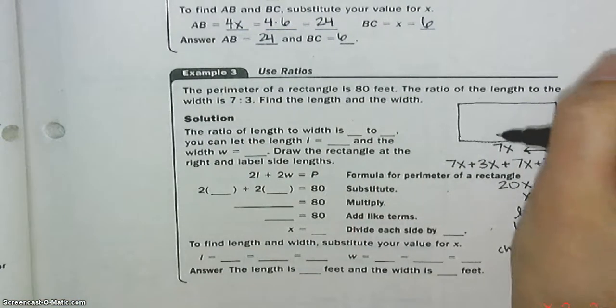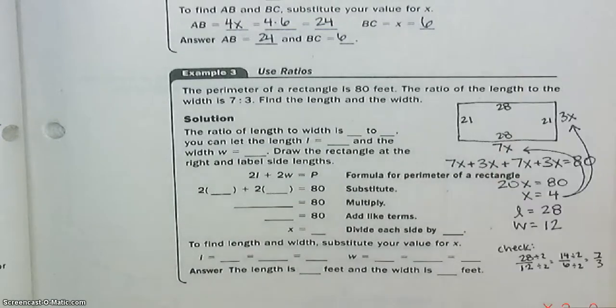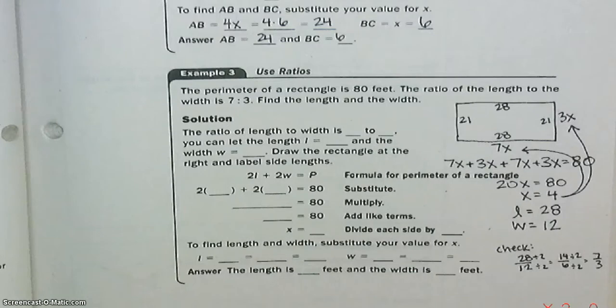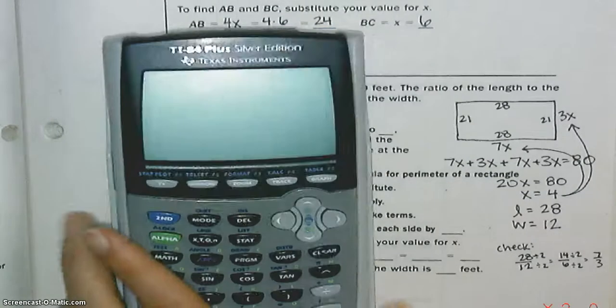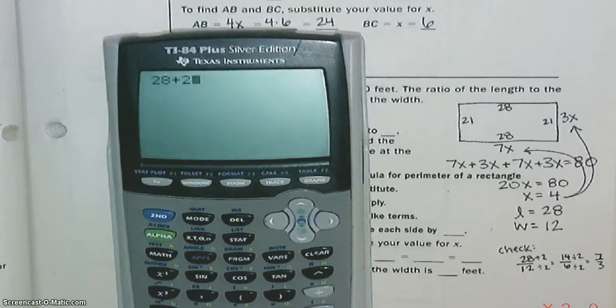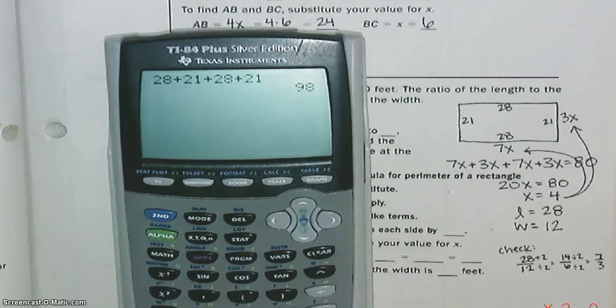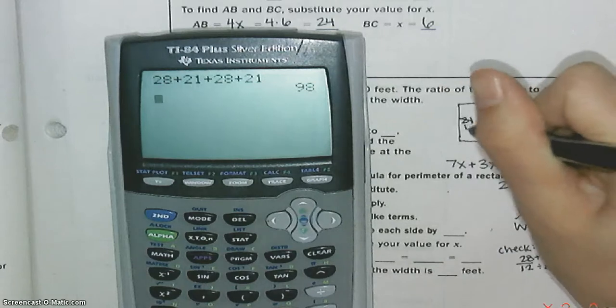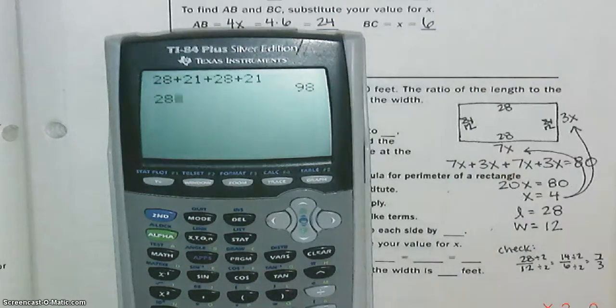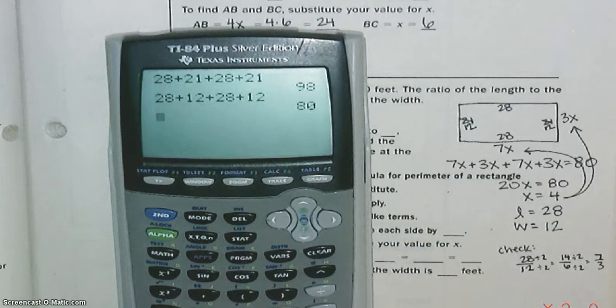Now let's see if our perimeter makes 80. So we said this was 28, this was 12, this was 28, and this was 12. Let's add all those up. So I'll get my calculator. 28 plus 12 plus 28 plus 12. 80. There we go. That's what we wanted. So we did this correct.